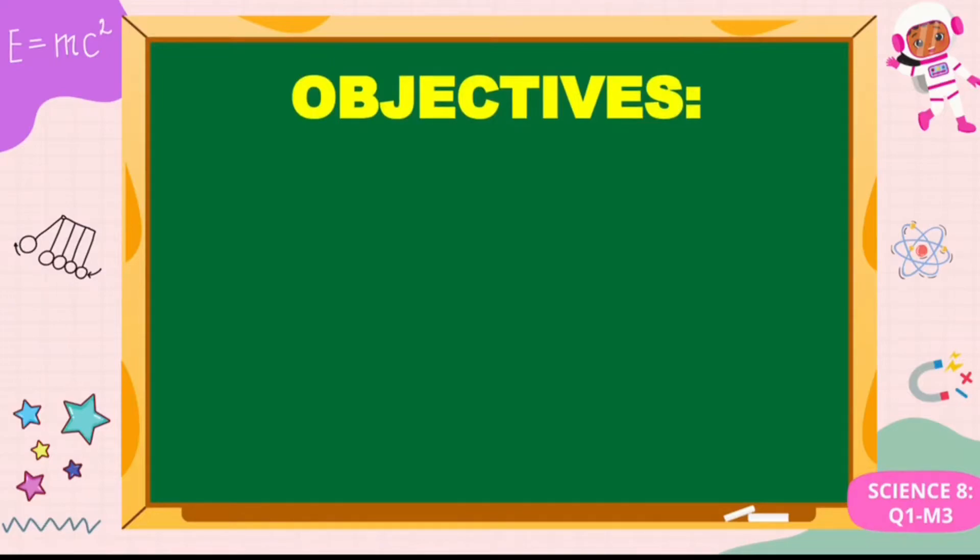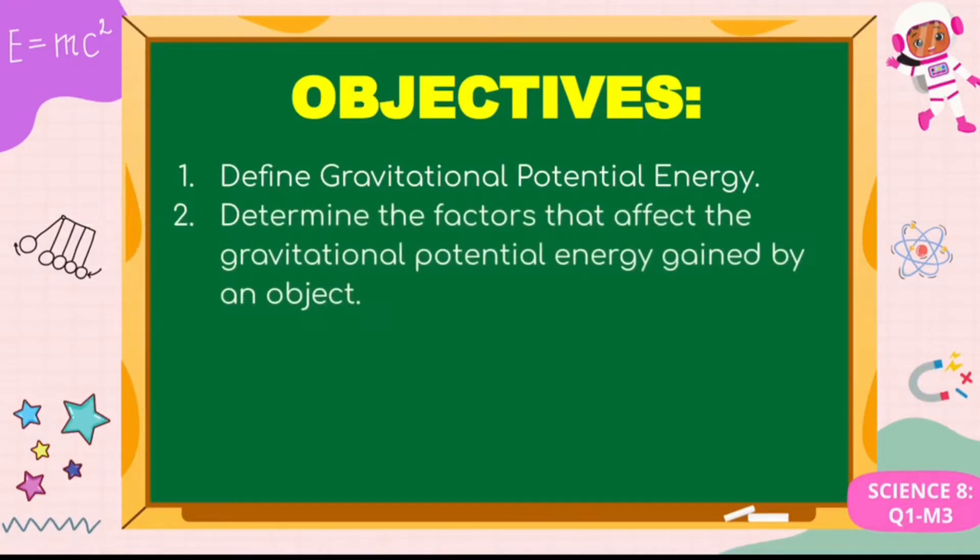Objectives. Number 1: Define Gravitational Potential Energy. Number 2: Determine the factors that affect the gravitational potential energy gained by an object. And number 3: Calculate the potential energy of an object.